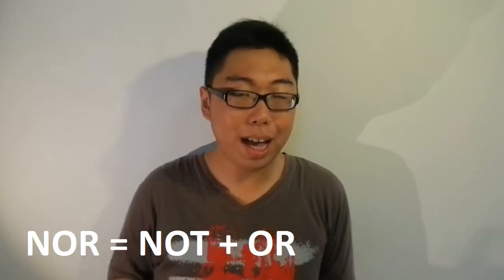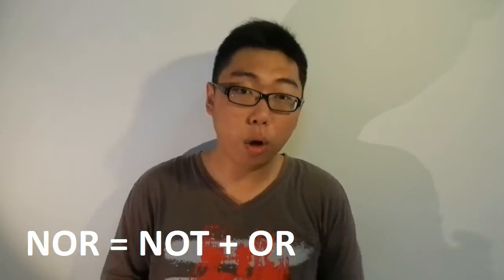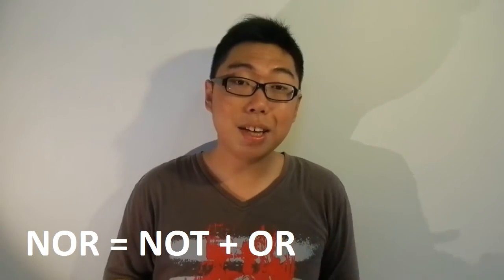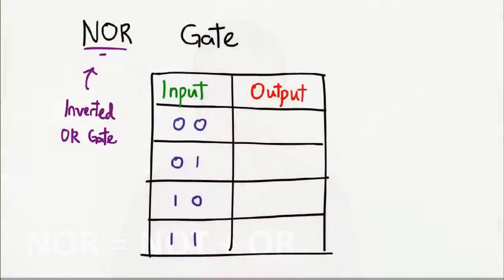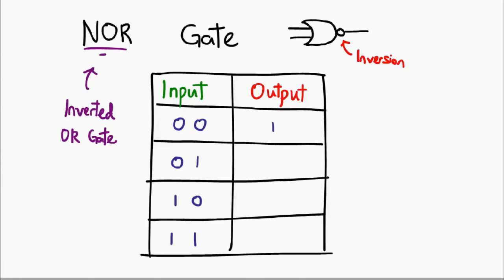If you understand the concept behind a NAND gate, the NOR gate should be no problem. It is simply NOT OR. Similarly, the symbol is exactly the same but with a little circle at the end, and the truth table is simply an inversion of the OR truth table. Zero and zero normally give you zero — therefore you write one in the output column. For everything else, the output, which is normally one, will get inverted to zero.